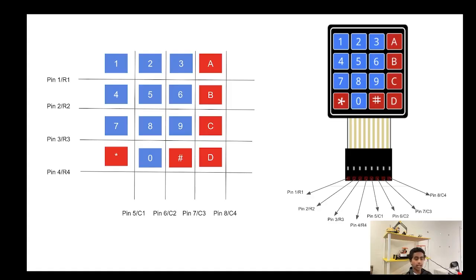Before we start programming, let's see how the keypad works. There are basically 8 pins on the keypad, and I've labeled them as pin 1 R1, which stands for row number 1. Row number 1 has values 1, 2, 3, and A.